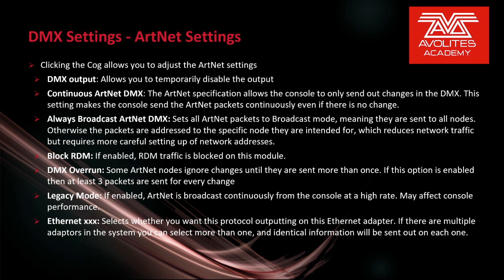Those settings are as follows. DMX Output allows you to temporarily disable the output. Continuous Artnet DMX: the Artnet specification allows the console to only send out changes in the DMX; this setting makes the console send out Artnet packets continuously even if there is no change. Always Broadcast Artnet DMX sets all Artnet packets to Broadcast mode, meaning they are sent to all nodes; otherwise packets are addressed to the specific node they are intended for, which reduces network traffic but requires more careful setup of network addresses. Block RDM: if enabled, RDM traffic is blocked on this module. DMX Overrun: some Artnet nodes ignore changes until they are sent more than once; if this option is enabled, at least three packets are sent for every change. Legacy Mode: if enabled, Artnet is broadcast continuously from the console at a high rate, which may affect console performance. Ethernet XXX: this selects whether you want this protocol outputting on the Ethernet adapter; if there are multiple adapters in the system, you can select more than one, and identical information will be sent out on each one.